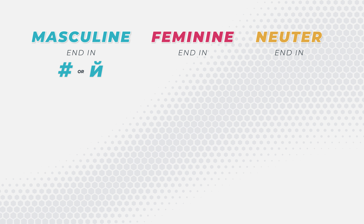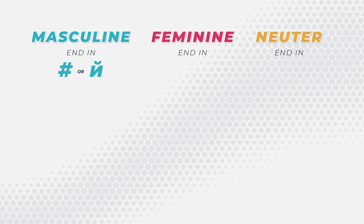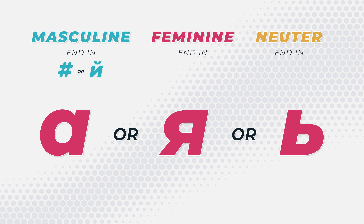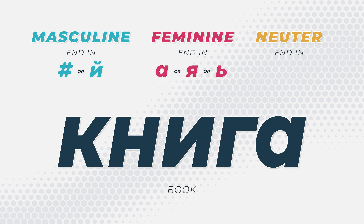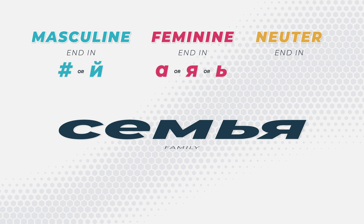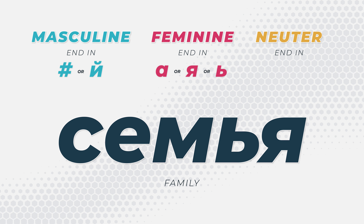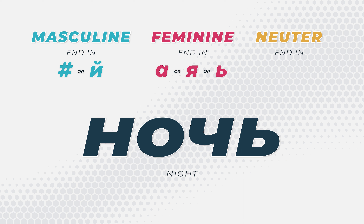Feminine words end in an А, Я, or мягкий знак — the soft sign. So if we take the word книга, which is book, we see here that it ends in an А. It's not a consonant, it's not a краткое, but it's an А, so we know that it's feminine. If we take the word семья — family — we see here that it ends in a Я, that's one of our trigger endings to know that it's a feminine word. And then if we look at ночь, this one ends in the soft sign, and we know that the soft sign means that it's a feminine word.